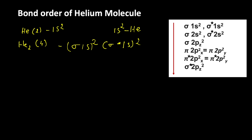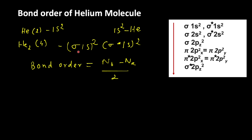From this electronic configuration of the molecule we can find out the bond order. Bond order is equal to (Nb minus Na) divided by 2, where Nb represents the number of electrons in bonding molecular orbitals and Na represents the number of electrons in antibonding molecular orbitals. From the electronic configuration of the helium molecule, we have 2 electrons in bonding molecular orbitals and 2 electrons in antibonding molecular orbitals.